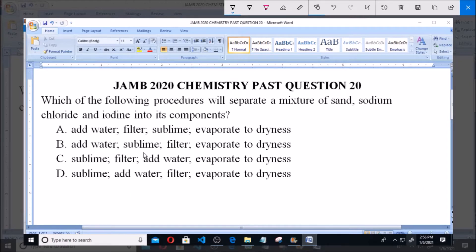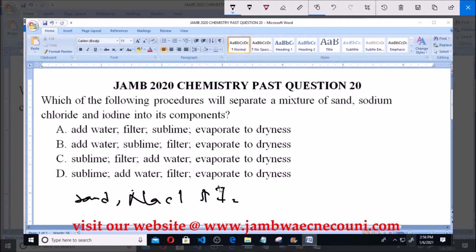Now let's take it gradually. We have a mixture of sand, sodium chloride, and iodine. Like we know, iodine in this mixture can sublime - that is, it can change directly from solid to gas. So the first thing to do is to sublime. By heating, iodine will sublime, leaving out sand and sodium chloride. So we've cancelled out iodine.